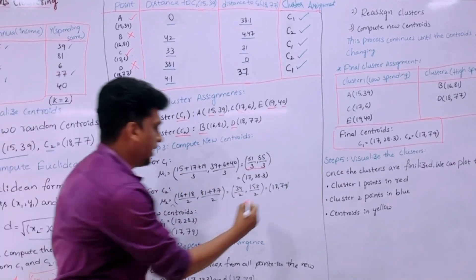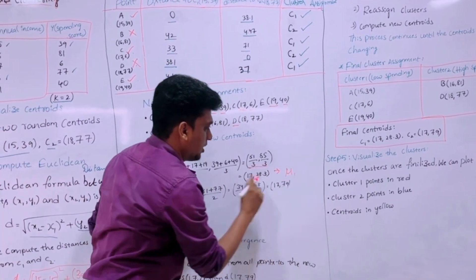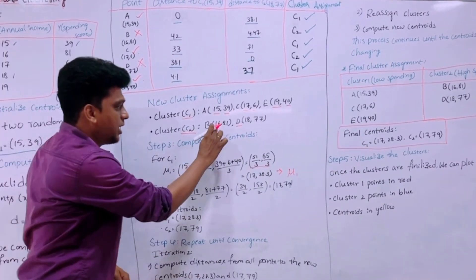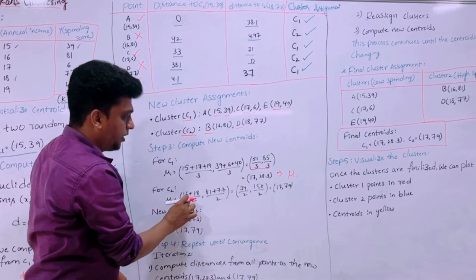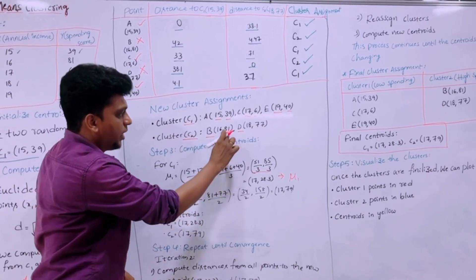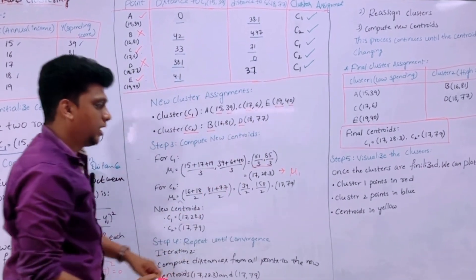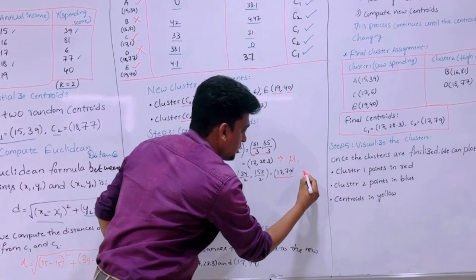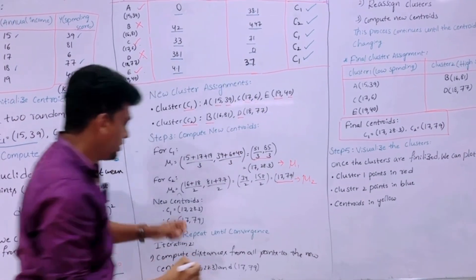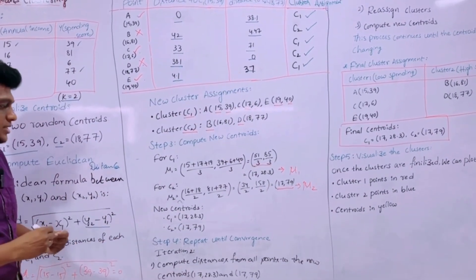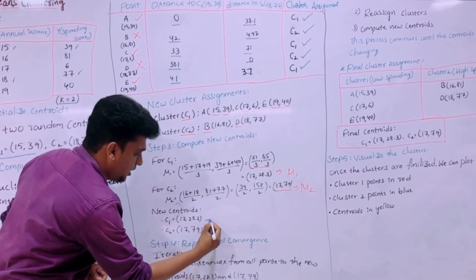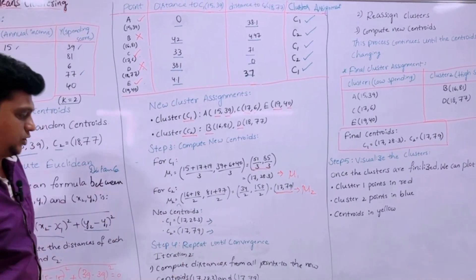So this is the mu1 value 17 comma 28.3. Then similarly for C2 we are calculating 16 plus 18, 16 plus 18 divided by 2, then comma 81 plus 77 divided by 2. So it is finding us 17 comma 79, so this is mu2. So these two are the new centroids that we are finding. It is taken as mu C1 and mu C2.